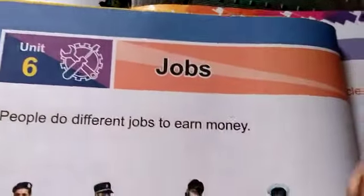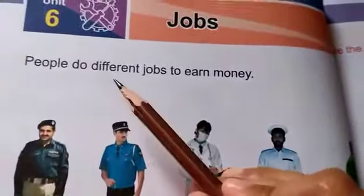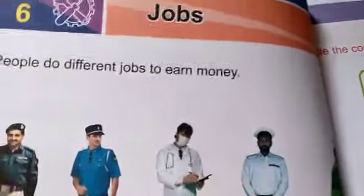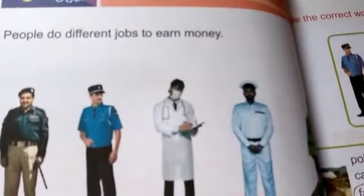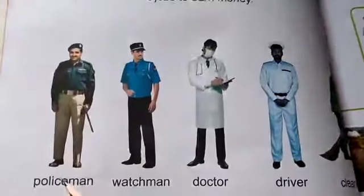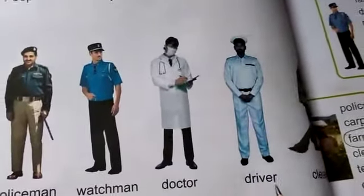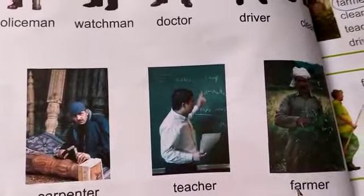SST का आज हमने करना है. हमने अपना Book Page number 11 open किया. Unit number 6, topic है हमारा Jobs. People do different jobs to earn money. अब हर कोई जॉब करता है, लेकिन सबकी जॉब सेम नहीं है — different जॉब है. For example: police, watchman, doctor, driver, cleaner, carpenter, teacher, farmer.